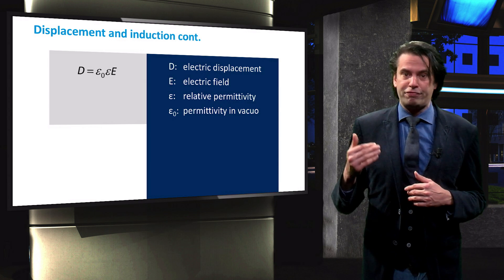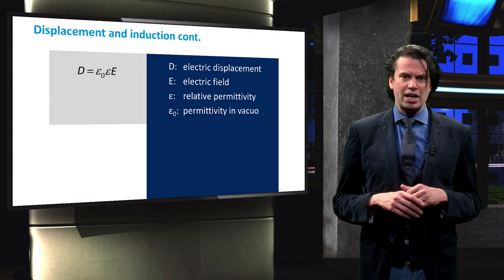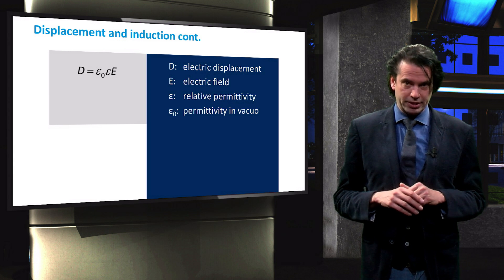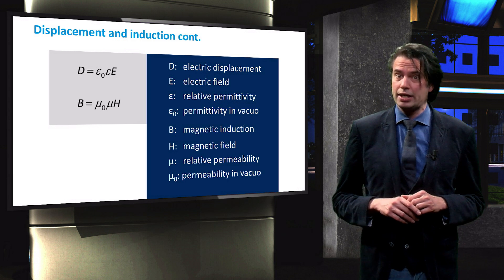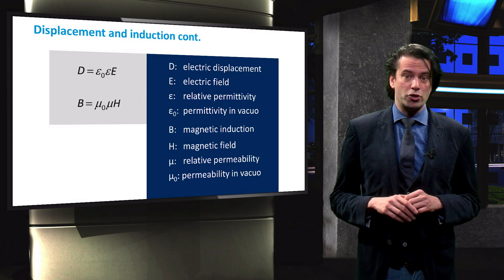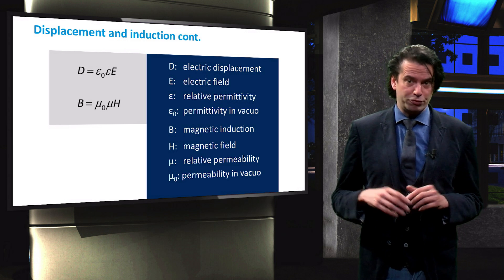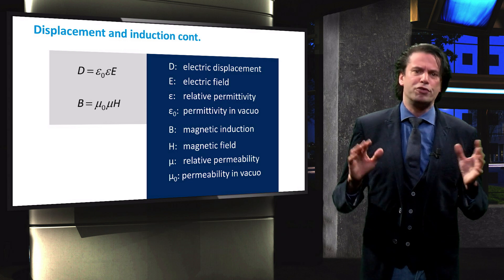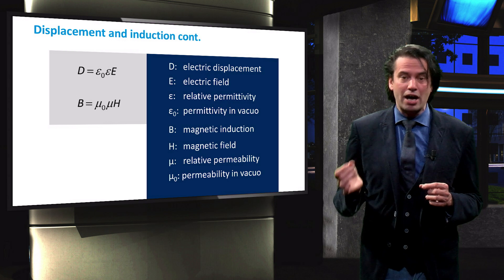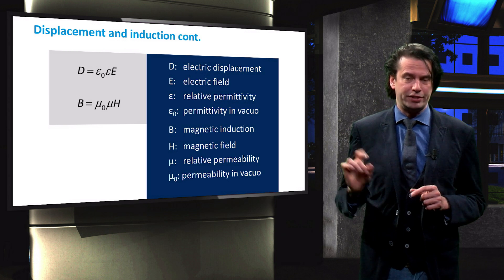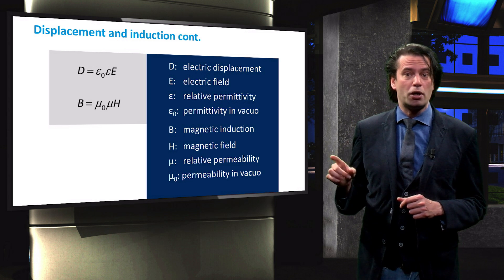The electric displacement reduces the overall field within the dielectric itself. The electric displacement D is related to the electric field E via the constitutive equation, where epsilon is the relative permittivity of the medium and epsilon-naught is the vacuum permittivity. Their product gives the absolute permittivity of a material. Similarly, a magnetic material can cause a magnetic induction B. The magnetic field H and the induction B are related through a similar constitutive equation, where mu is the relative permeability of the medium and mu-naught is the permeability of free space. Note that these equations are only valid if the medium is isotropic, so epsilon and mu are independent of the direction of either field. We can assume that all solar cell materials are non-magnetic, meaning that for solar cell materials mu is equal to 1.